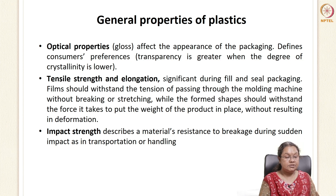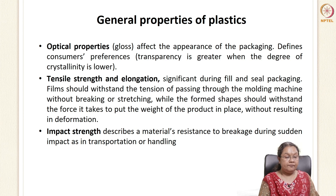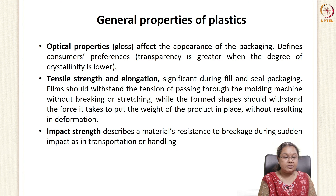The second property is tensile strength and elongation, which is very important for a packaging material. There is generally an inverse relationship between tensile strength and elongation, but in some cases like polylactic acid we see a direct relationship. Tensile strength and elongation are significant during filling and sealing — the packaging should be able to withstand the tension of passing through the molding machine without breaking or stretching, and the formed shape should withstand the force of the product weight without deformation.